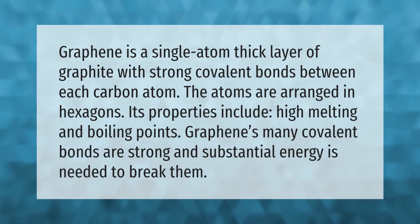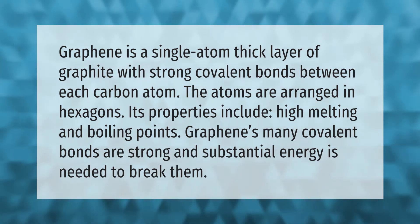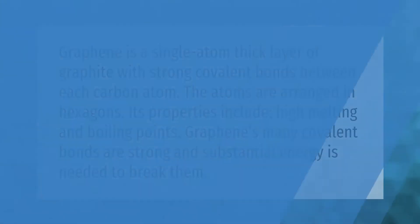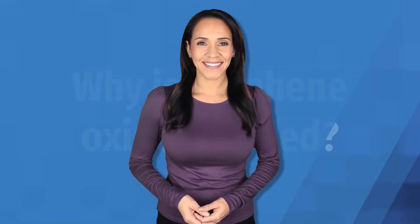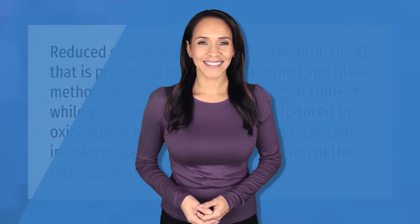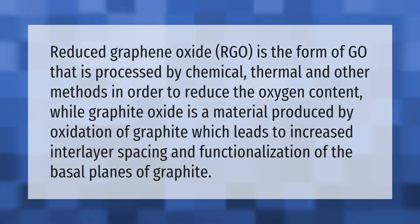Graphene's many covalent bonds are strong and substantial energy is needed to break them. Reduced graphene oxide (rGO) is the form of GO that is processed by chemical, thermal, and other methods in order to reduce the oxygen content.